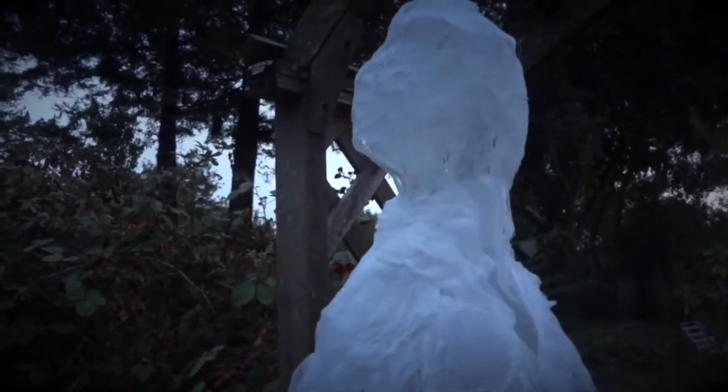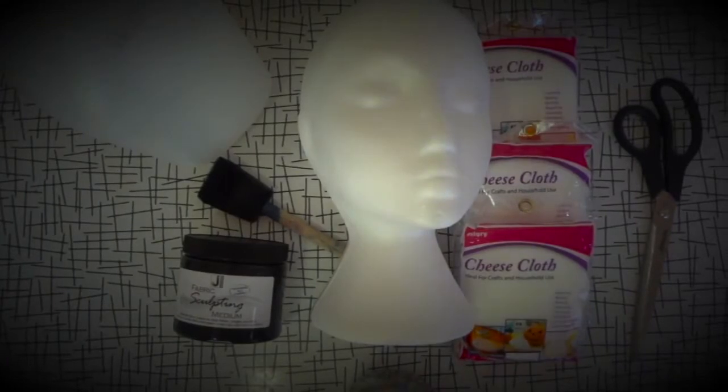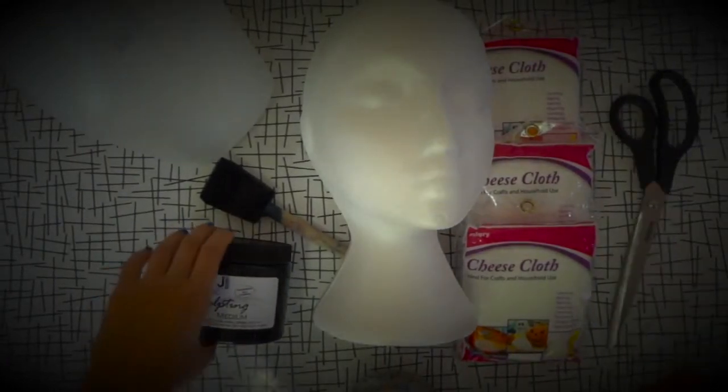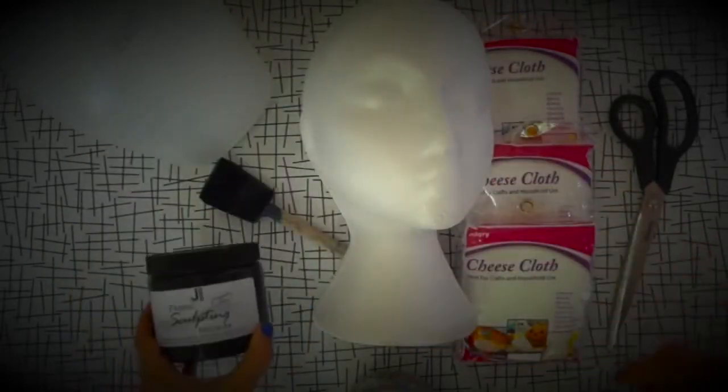All you need is a Ouija board. Just a sponge brush, scissors, plastic wrap, floral wire, and Jacquard's fabric sculpting medium.